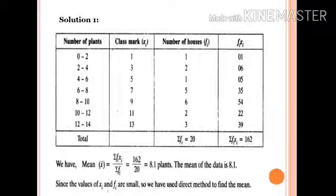Solution by direct method. Number of plants: 0 to 2, class mark will be 0 plus 2 by 2, equals 1. 2 to 4: 2 plus 4 equals 6, 6 by 2 equals 3. 4 to 6: 4 plus 6 equals 10, 10 by 2 equals 5. 6 to 8: 14 by 2 equals 7. 8 to 10: 18 by 2 equals 9. 10 to 12: 22 by 2 equals 11. 12 to 14: 26 by 2 equals 13.